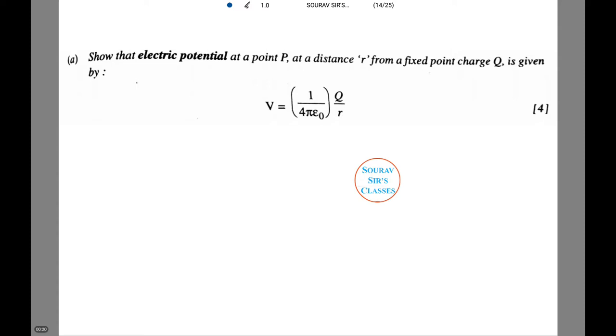We need to show that the electric potential at a point P at a distance R from a fixed point charge Q is given by V equals 1 by 4πε₀ into Q by R. Since this is going to be a long question, notice the marks given over here is 4. I am going to be doing it in a new screen for you to follow all the process that I will be doing.